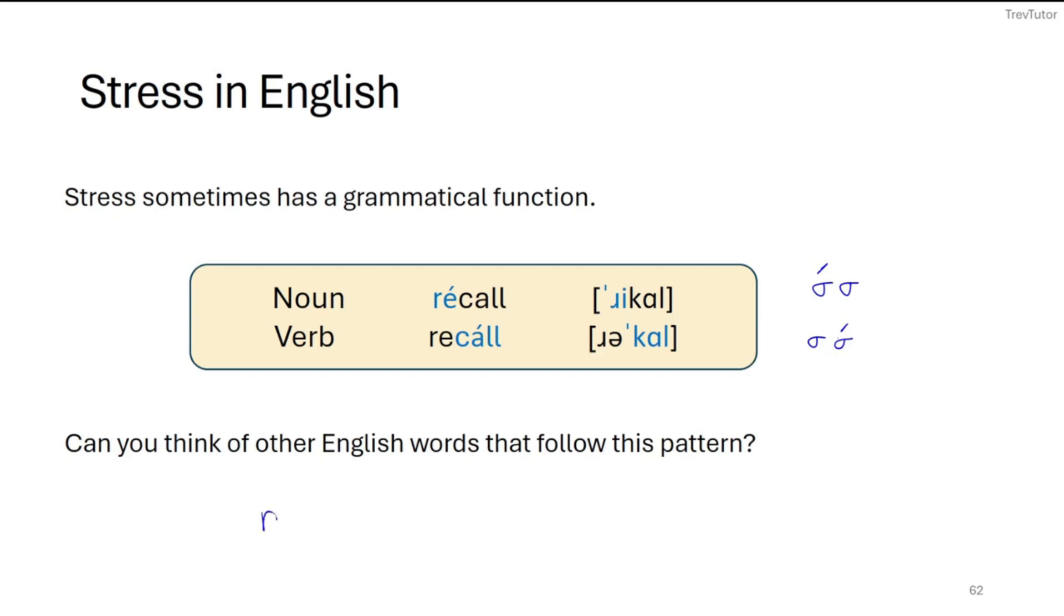Another example might be the word record. Is it record or is it record? So if it's record, then it's a noun. And this is talking about a physical disc that plays music. So that's a record. But if we talk about recording, this is now a verb. And here is an example of a microphone and then someone speaking into it. That's my picture of a human. So primary stress on the second syllable would give us record, which is the verb.